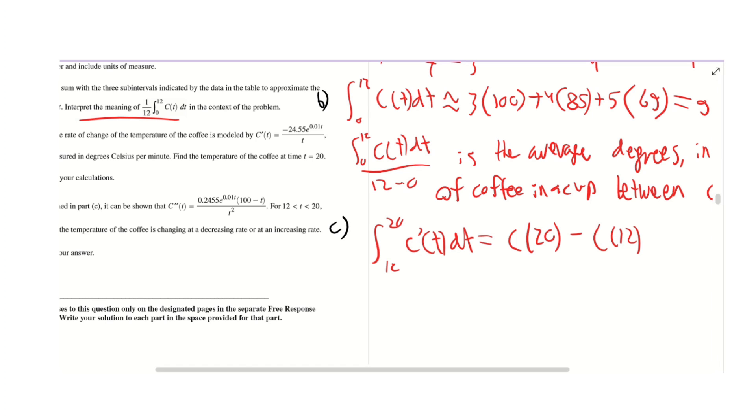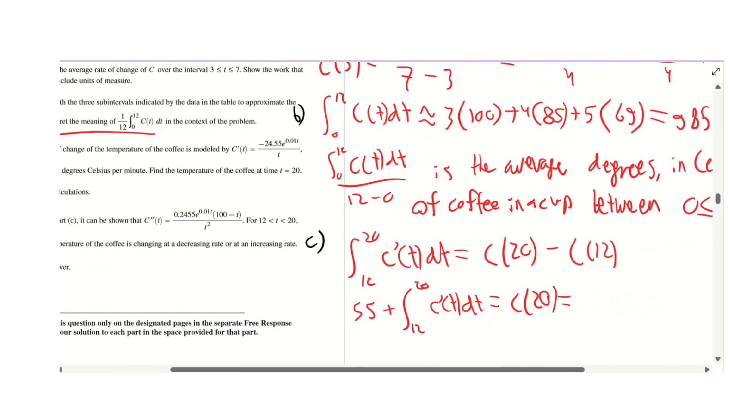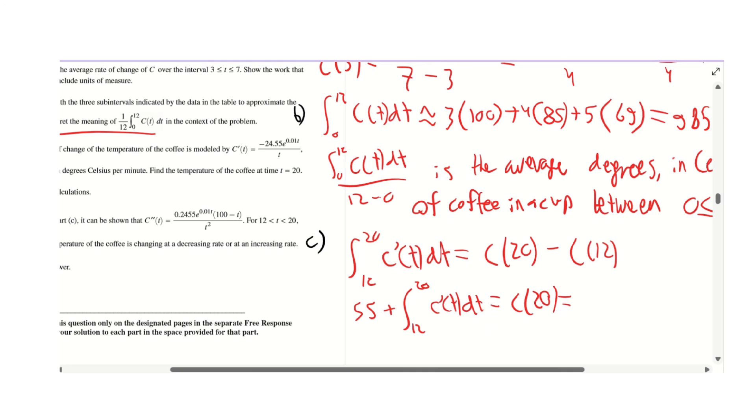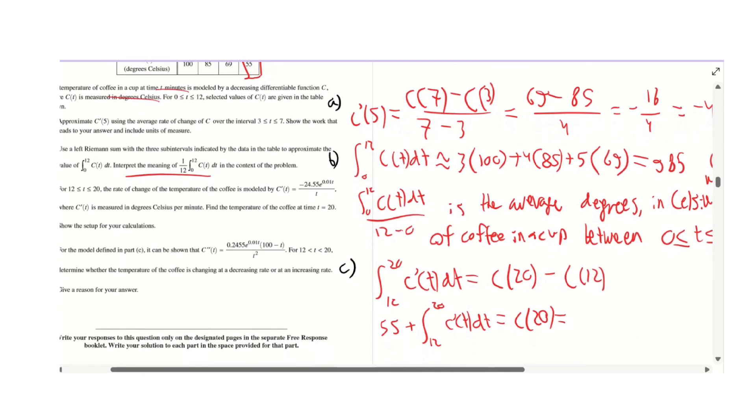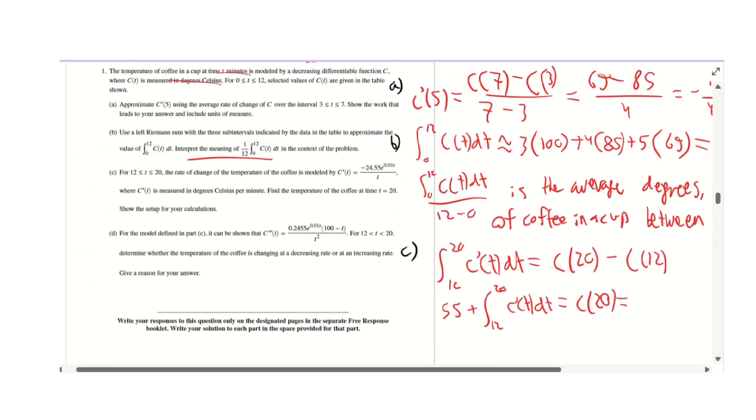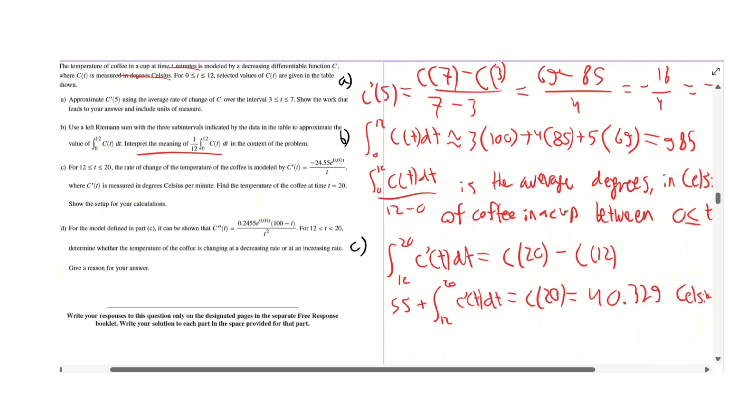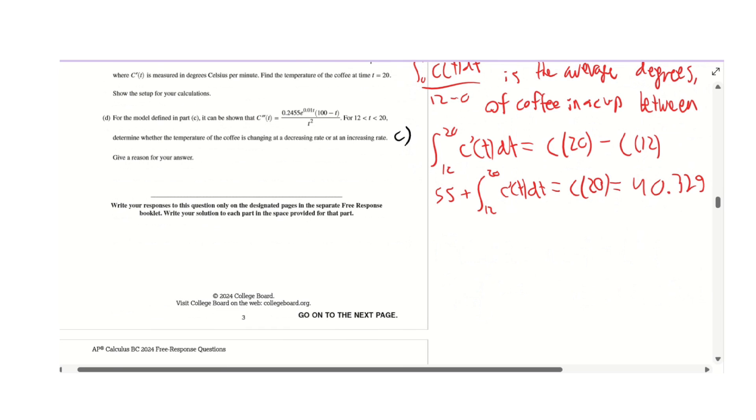C(12) is given as 55, so to find C(20) we do 55 plus integral from 12 to 20 of C'(t)dt. This is where you need your graphing calculator. Using Math 9 from 12 to 20 with the function 4.5e^(0.01x)/x with respect to x, that gives you the temperature of the coffee at t equals 20, which is 40.329 Celsius.